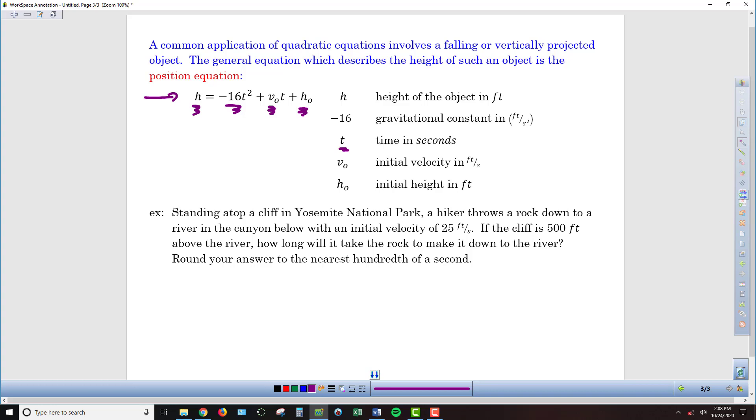then that number is going to be positive. If we're throwing something down, then that number is going to be negative. And then the h sub zero, this last number, is the initial height, the starting height of the object.